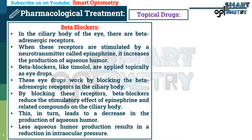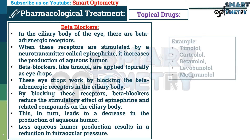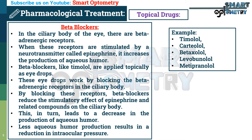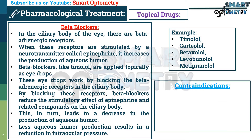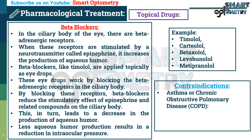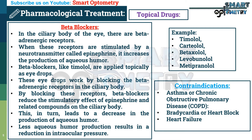Less aqueous humor production results in reduction in intraocular pressure. These are examples of beta blockers. Contraindications of beta blockers include asthma or chronic obstructive pulmonary disease, bradycardia or heart block, heart failure, pregnancy, and breastfeeding.